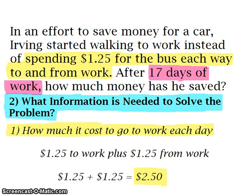Number one: how much it costs for him to go to work each day. In the problem, it says it costs $1.25 for the bus each way to and from work. So when Irving goes to work, he pays $1.25, and when he goes from work to home, he pays another $1.25. Because this was a bit tricky — he pays $1.25 to catch the bus to work and $1.25 to catch the bus from work to home — $1.25 plus $1.25 is equal to $2.50.